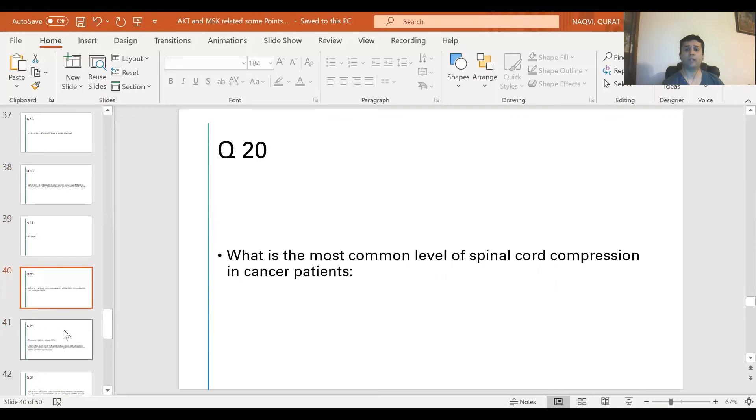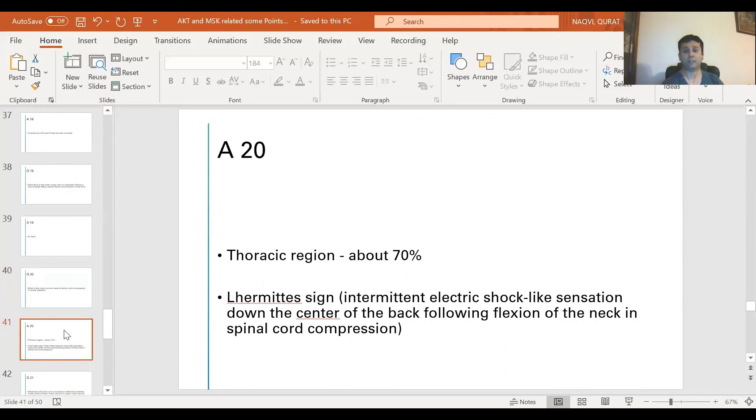Question 20: What is the most common level of spinal cord compression in cancer patients? It will be thoracic region, about 70%. Another thing to remember which is often in exams is Lhermitte sign, which is essentially intermittent electric shock-like sensation down the center of the back following flexion of the neck in spinal cord compression.